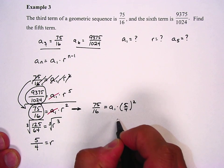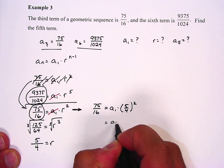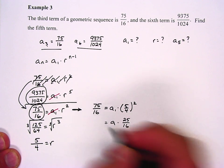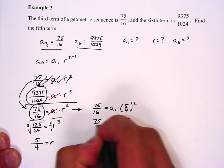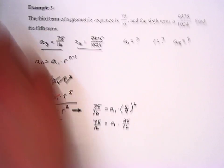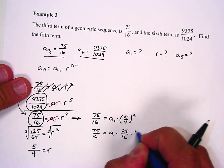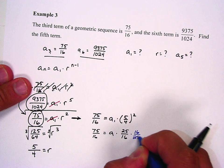I know 5 fourths squared is going to be 25 sixteenths. If I want to get rid of the 25 sixteenths, I'm going to multiply by 16 twenty-fifths on both sides.